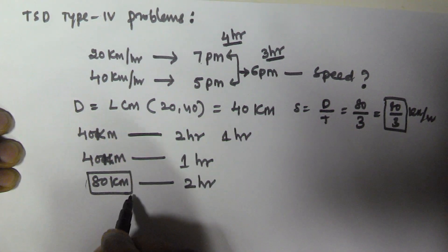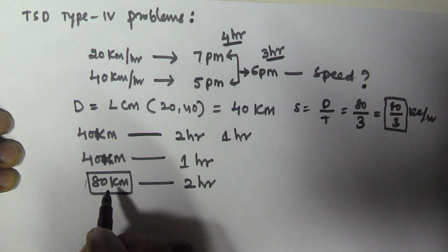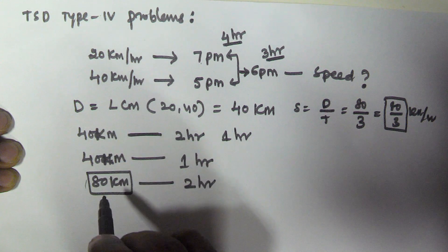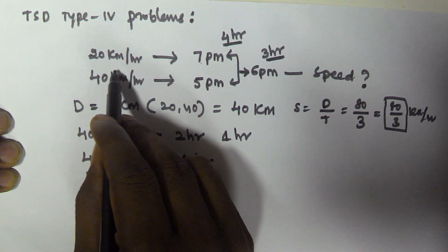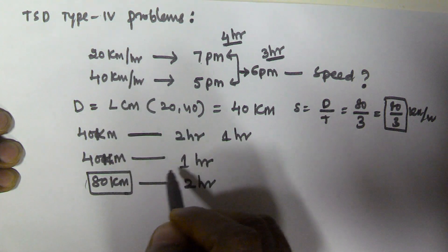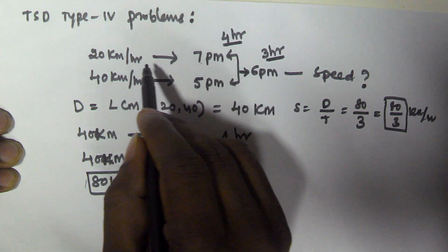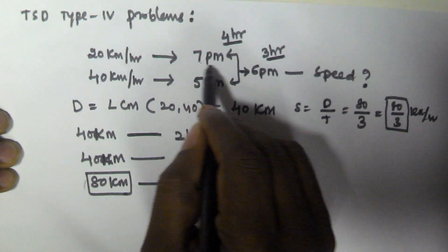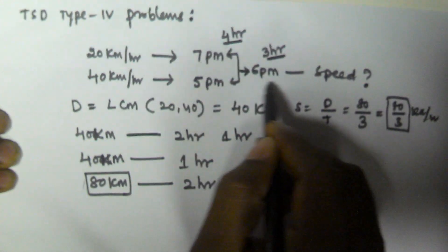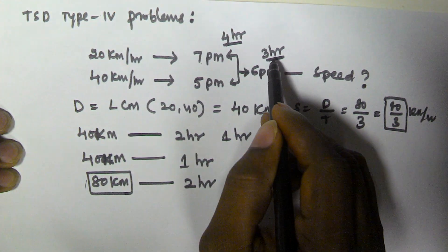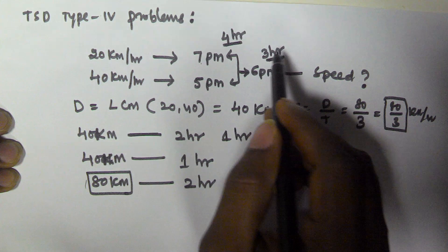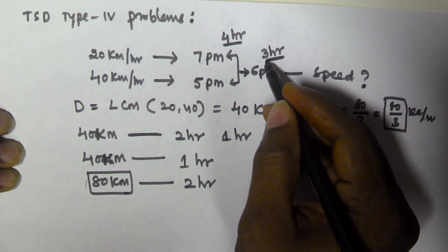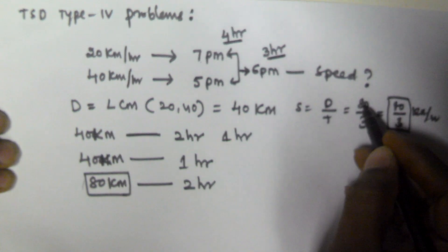The actual distance is 80 km. On the first day he is travelling with 20 km per hour; to cover 80 km at 20 km/h he has to travel 4 hours. So if he travels 4 hours he reaches at 7 pm. To reach at 6 pm he has to travel 3 hours. The distance is 80 km and the duration is 3 hours, so the speed is 80 by 3.